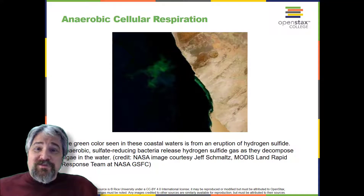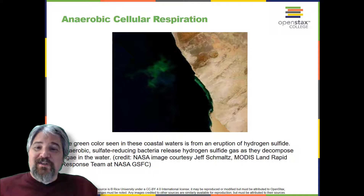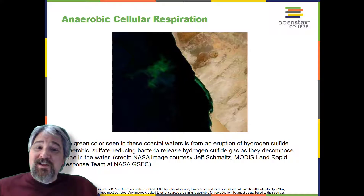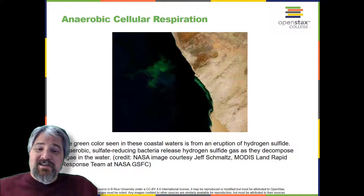Anaerobic cellular respiration. Certain prokaryotes, including some species of bacteria and archaea, use anaerobic respiration. For example, the group of archaea called methanogens reduces carbon dioxide to methane to oxidize NADH. These microorganisms are found in soil and in the digestive tract of ruminants, such as cows and sheep. Similarly, sulfate-reducing bacteria and archaea, most of which are anaerobic, reduce sulfate to hydrogen sulfide to regenerate NAD+ from NADH.